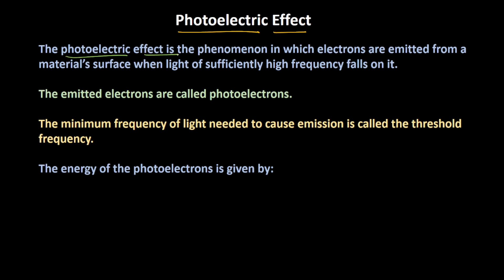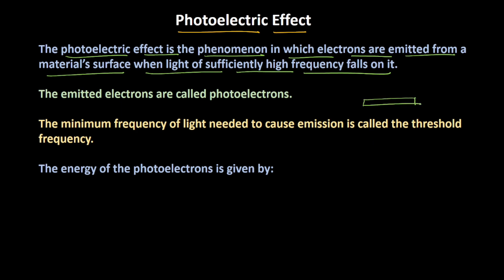The photoelectric effect is the phenomenon in which the electrons are emitted from a material surface when a light of sufficiently high frequency falls on it. For example, this is a metal surface and if you put an ultraviolet radiation of a sufficiently high frequency, then the electrons from the surface will start emitting out. This process is called the photoelectric effect and these electrons are called the photoelectrons.